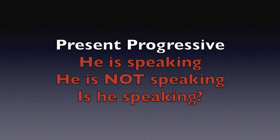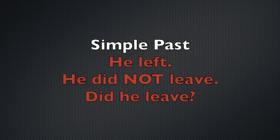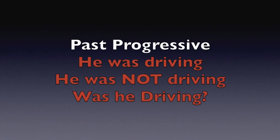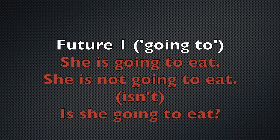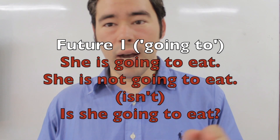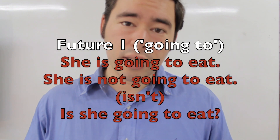Let's go to the first tense. Present progressive: he is speaking, he is not speaking, is he speaking? Simple past: he left, he did not leave, did he leave? Past progressive: he was driving, he was not driving, was he driving? Future one with going to: she will eat, she will not eat, will she eat? And then, of course, going to: she is going to eat, she is not going to eat, is she going to eat?